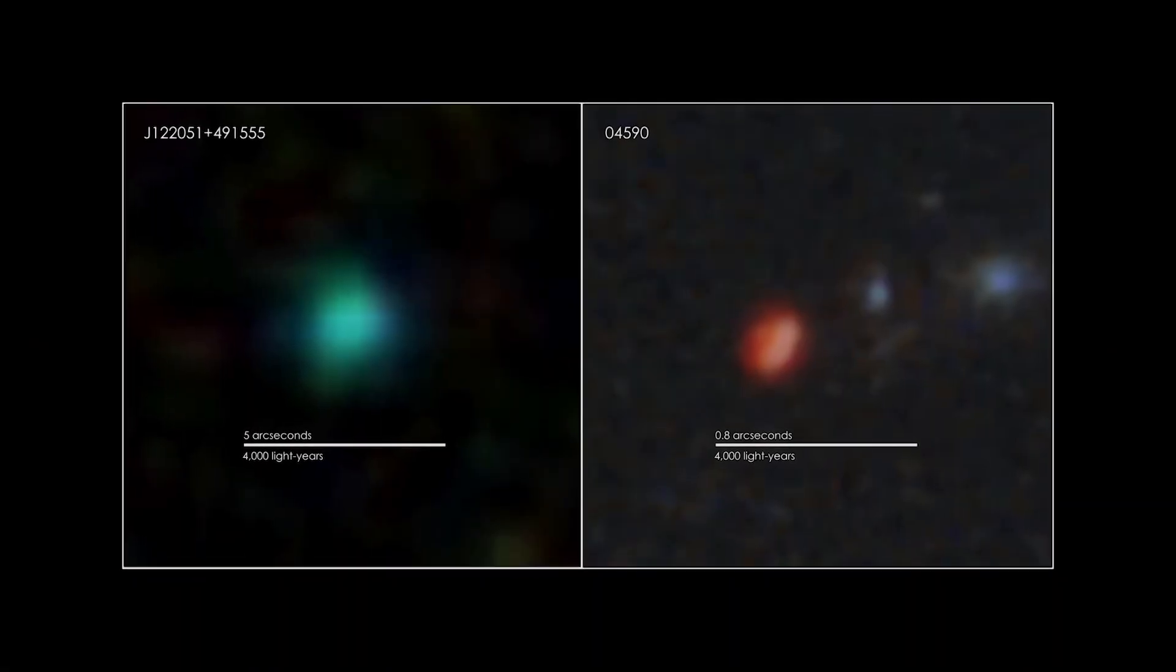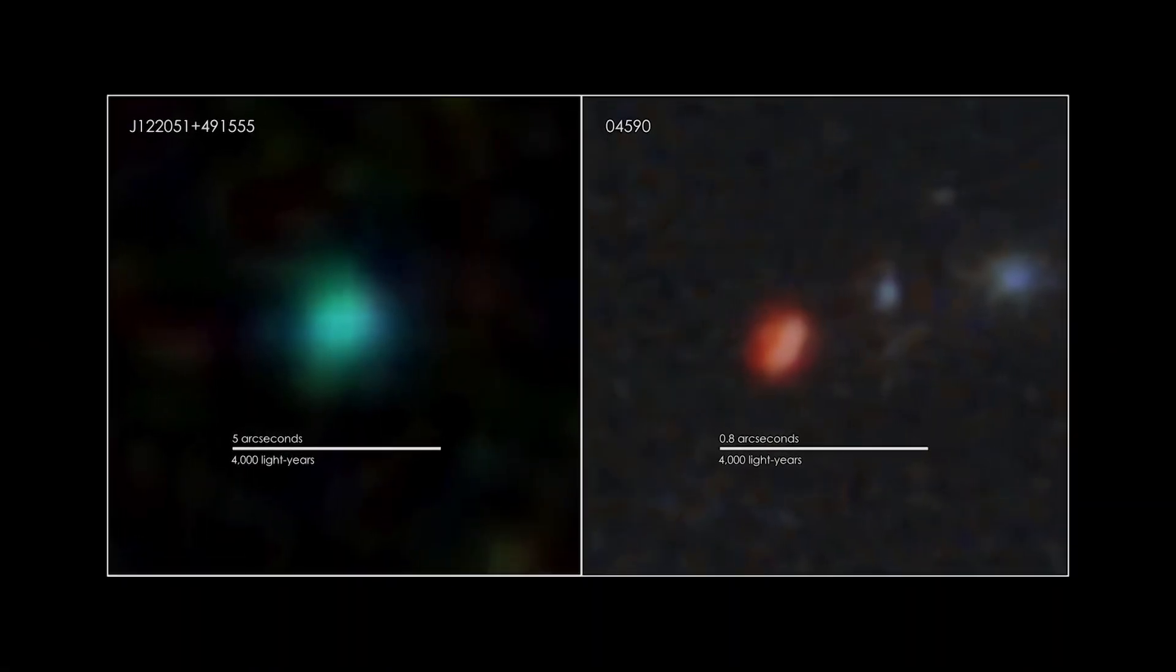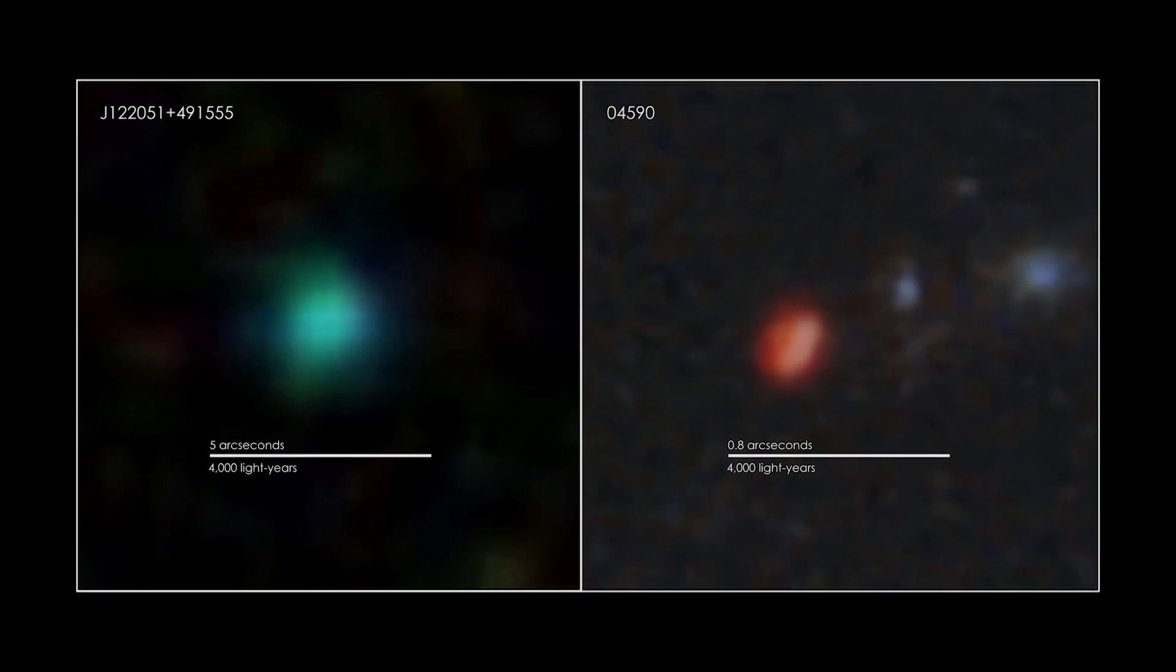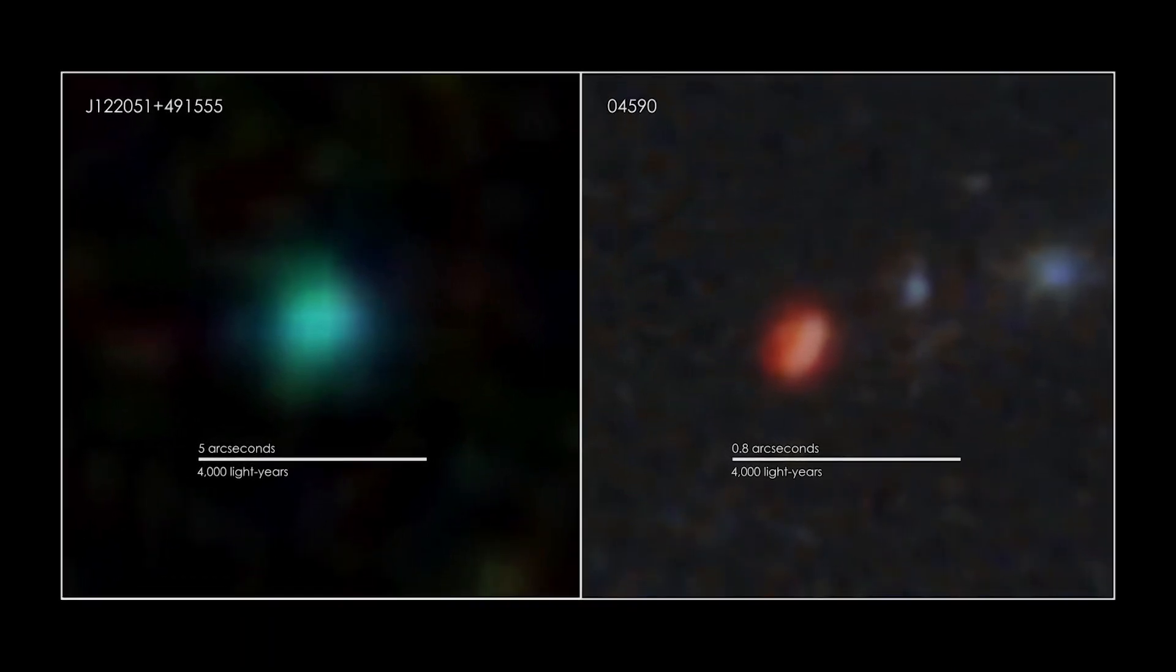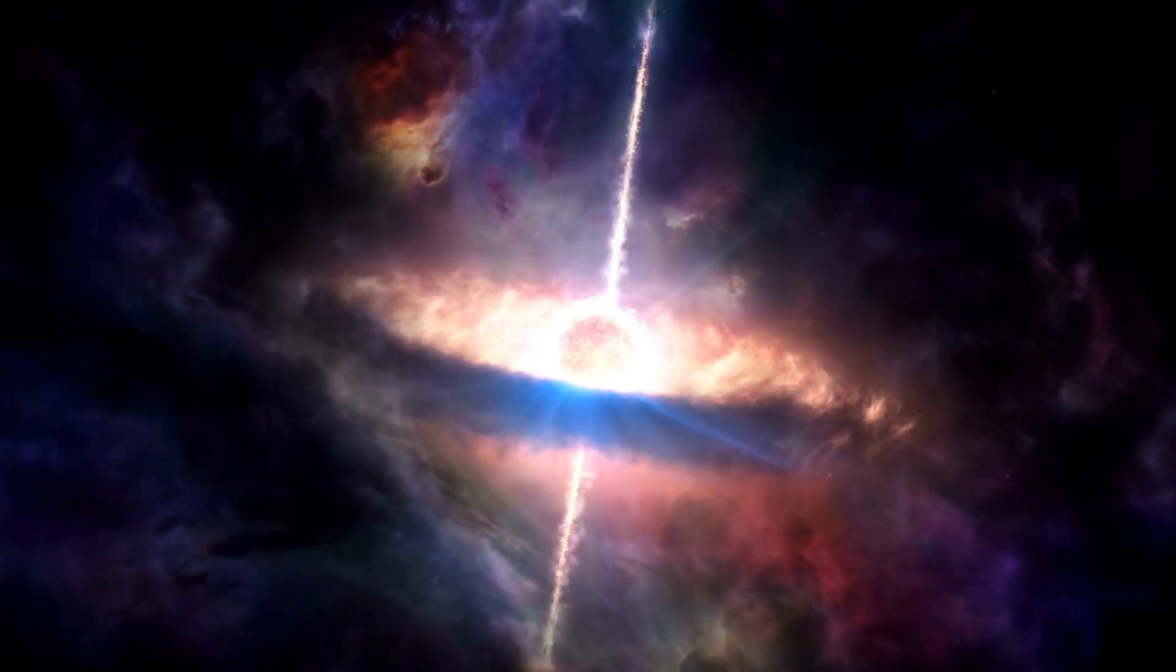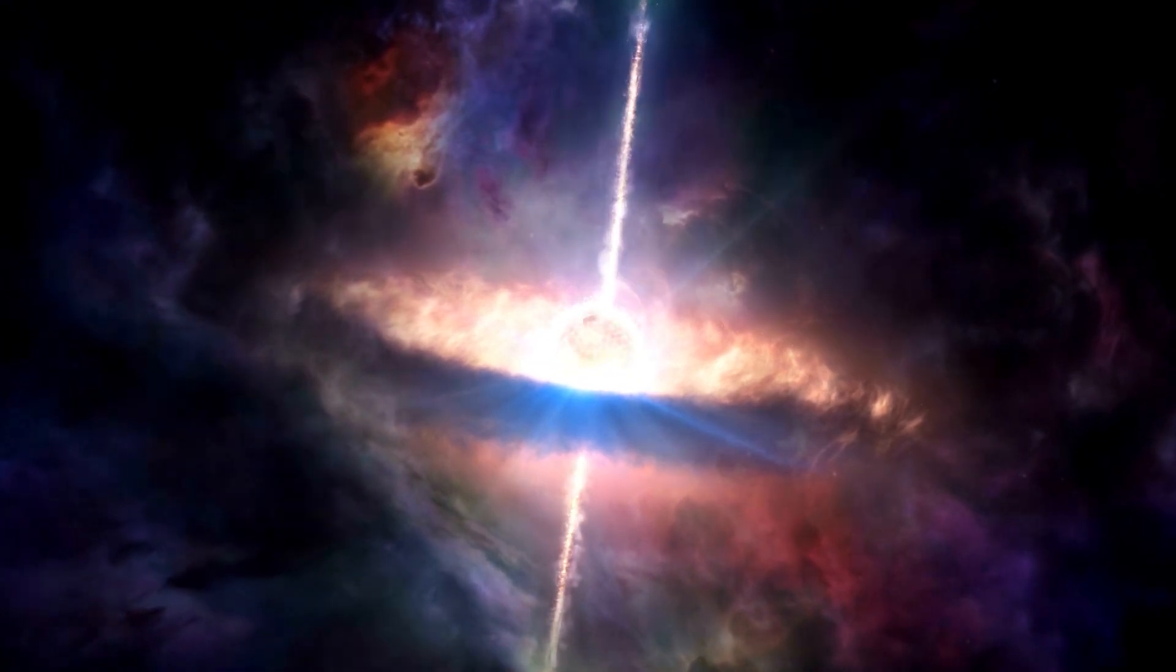Additionally, the Webb's spectra made it possible to measure the amount of oxygen in these cosmic dawn galaxies for the first time. As stars produce energy, they transmute lighter elements like hydrogen and helium into heavier ones. When stars explode or lose their outer layers at the ends of their lives, these heavier elements become incorporated into the gas that forms the next stellar generations.